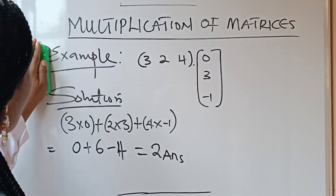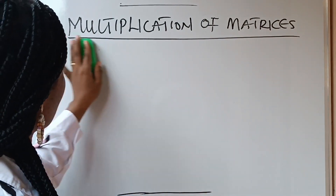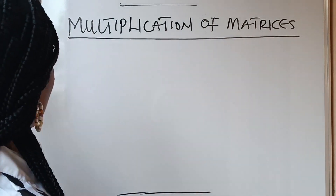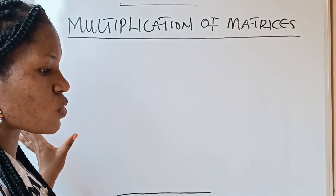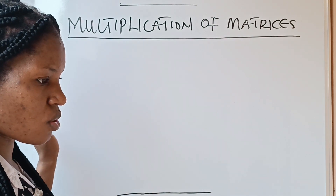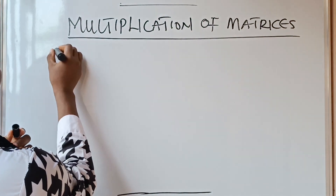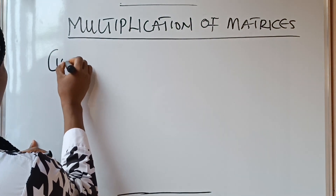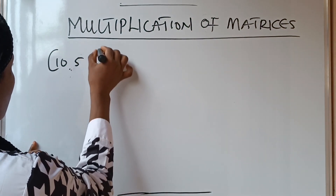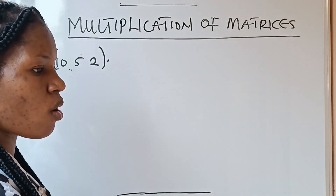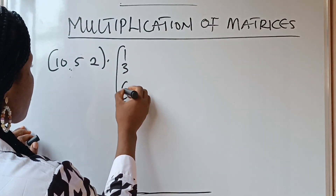Let's go ahead and solve the second example. We have [10, 5, 2] multiplied by the column [1, 3, 6].